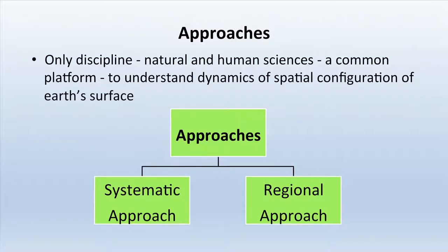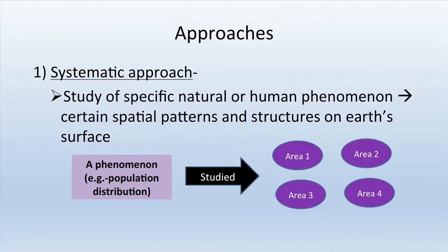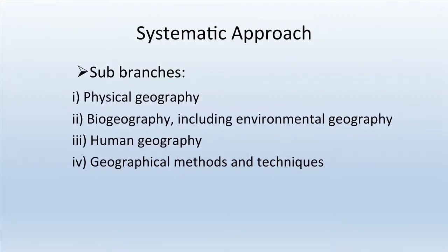Geography is the only discipline where natural and human sciences come to a common platform to understand the dynamics of spatial configuration of the earth's surface. There are two main approaches: the systematic approach and the regional approach. In the systematic approach, one aspect is studied across all places — for example, population across the entire world. Sub-branches include physical geography, biogeography, environmental geography, human geography, and geographical methods and techniques.